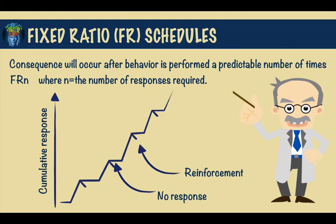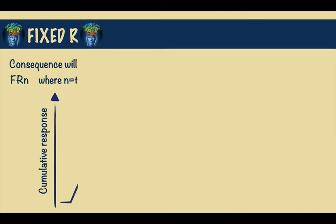A real-world example of an FR schedule would be that of a factory worker, where a worker might get paid $10 for every 100 items he makes. Essentially, the higher the output, the greater the pay. So not surprisingly, fixed ratio schedules result in higher productivity.